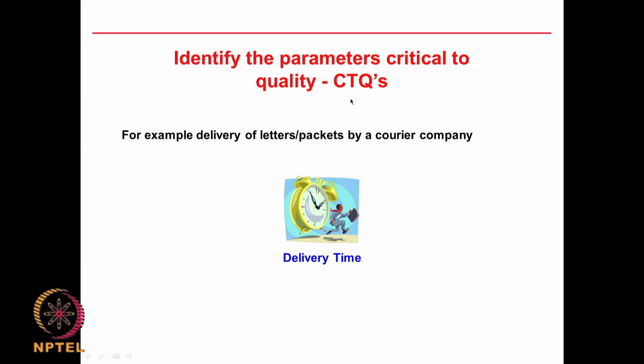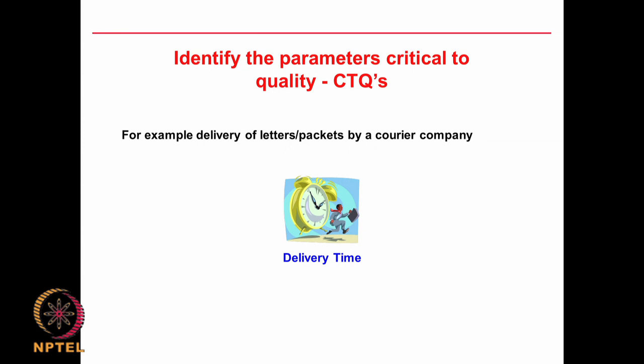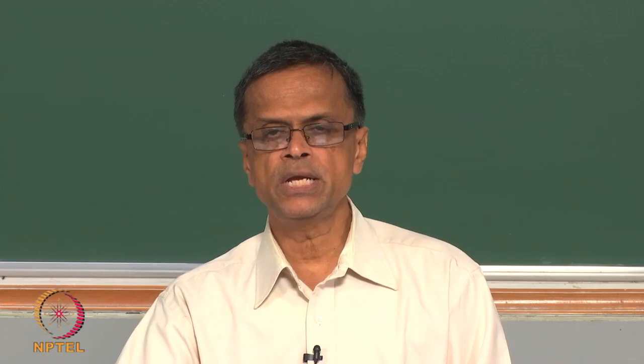This is called critical to quality (CTQ). We need to identify which parameters are very important and which are not. In a bioprocess product development you can think of hundreds of parameters: carbon concentration, nitrogen concentration, various micronutrient concentrations, pH, temperature, agitator RPM, amount of oxygen being bubbled — so many parameters. But only a few of them will be very important. The goal is to identify only those few and focus on controlling them — that is CTQ.